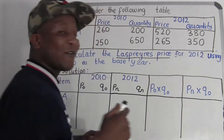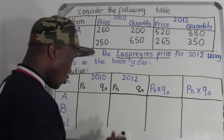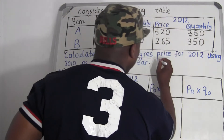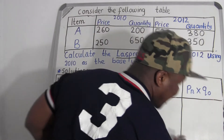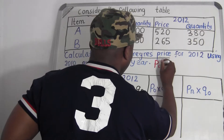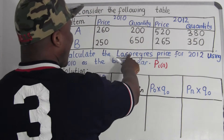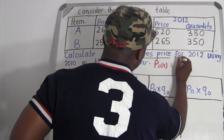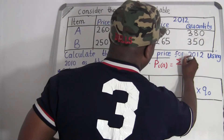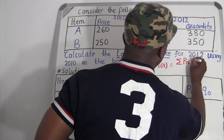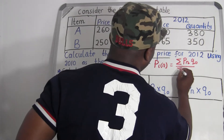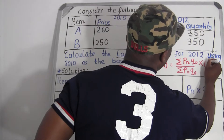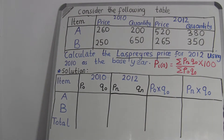So we have a formula for the Laspeyres price — you don't have to waste a lot of time. The formula is: LPRI equals the sum of pₙ times q₀, divided by the sum of p₀ times q₀, then multiplied by 100. We're going to use this formula to find the Laspeyres price for 2012 using 2010 as the base year.